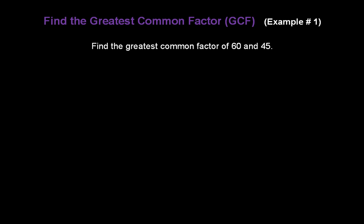Let's do another one using factor trees. Find the greatest common factor of 60 and 45. We can break 60 down into 6 times 10. 6 breaks down into 2 times 3, and 10 breaks down into 2 times 5. 45 breaks down into 5 times 9. 5 is already prime, but we know we can break 9 down into 3 times 3. Let's make sure we pull that 5 down to the bottom so we won't forget it when we're looking for greatest common factors.